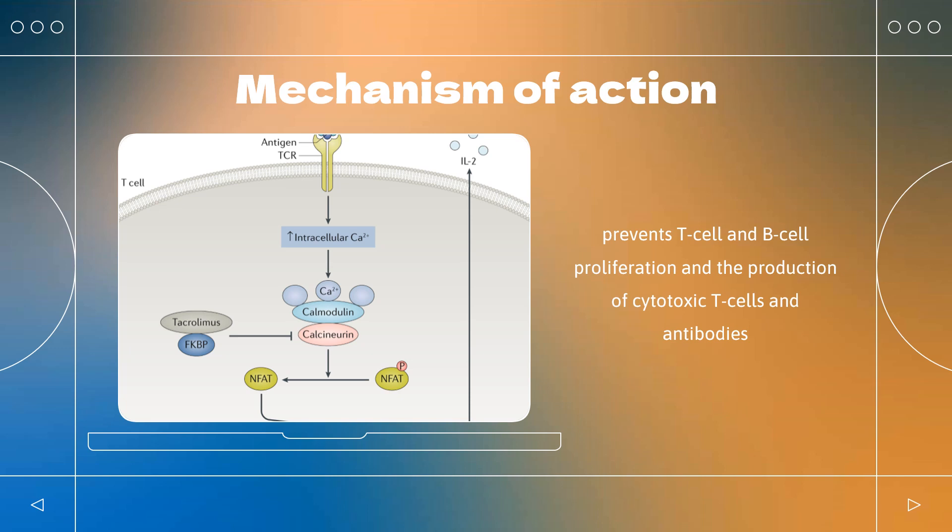Further contributing to its anti-inflammatory effects, MMF depletes tetrahydrobiopterin, causing the uncoupling of inducible nitric oxide synthase enzyme, in turn decreasing the production of peroxynitrite, a molecule that promotes inflammation.